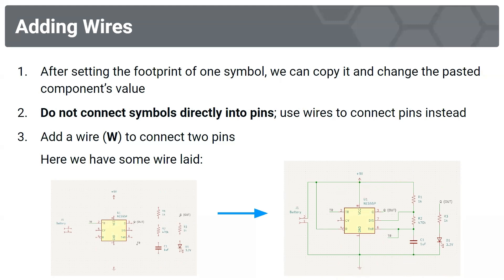Next, we're going to add wires. After setting the footprint of a symbol, you can copy it and change the pasted component's value. We won't connect pins directly — instead, we'll use wires. To add a wire, press W on your keyboard and connect two pins. To the right is an example of wires laid down for this project.